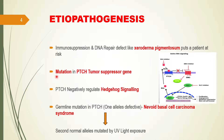The second important cause is mutation in the PTCH gene. This gene is one of the tumor suppressor genes, meaning it prevents cell proliferation. This tumor suppressor gene is mutated in basal cell carcinoma. The role of PTCH in our body is that it negatively regulates the hedgehog signaling pathway.